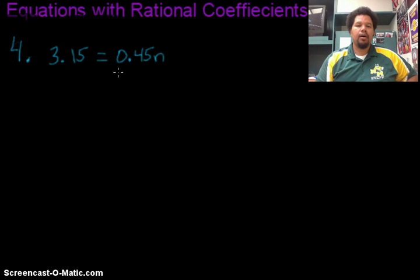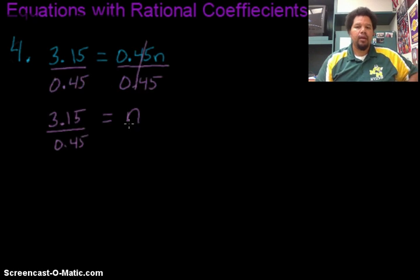So now I'm dealing with decimals this time. And the variable is on the right side. Doesn't change what we're trying to do. We're trying to isolate n. n is being multiplied by 0.45. So that means I'm going to divide both sides by 0.45. In order to divide by a decimal, we need to make sure that the divisor, this one on the bottom or the outside, has to be a whole number. So I got to move this decimal point over two times to make it a 45.